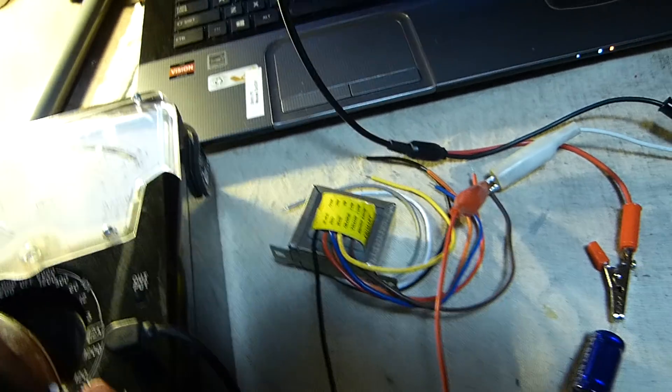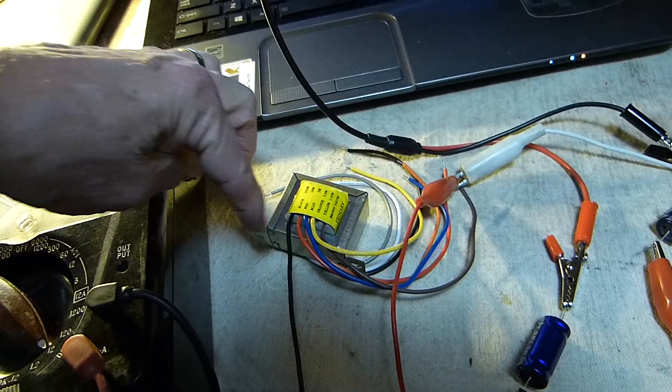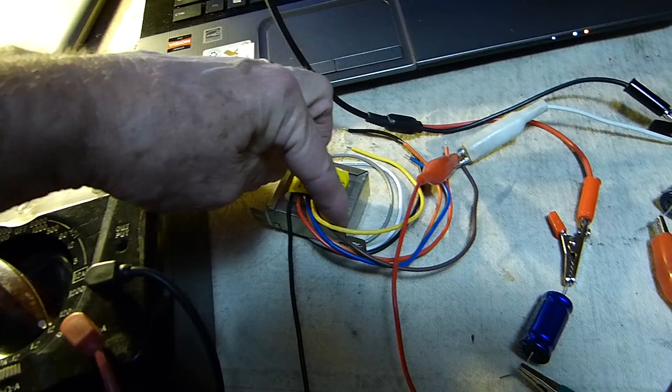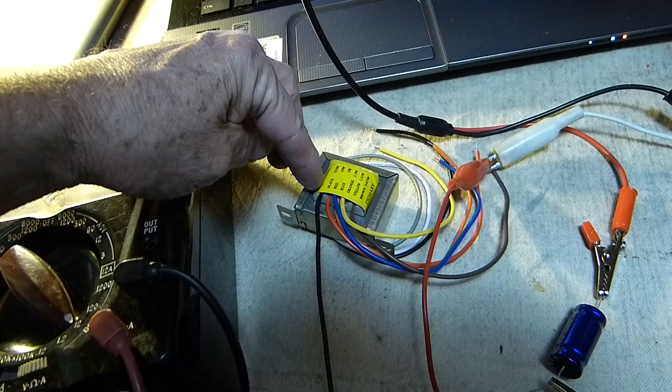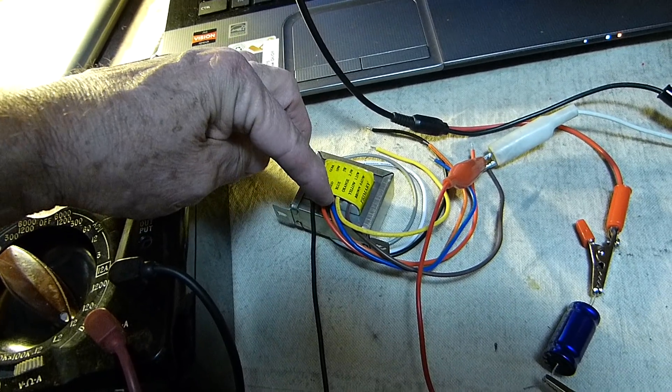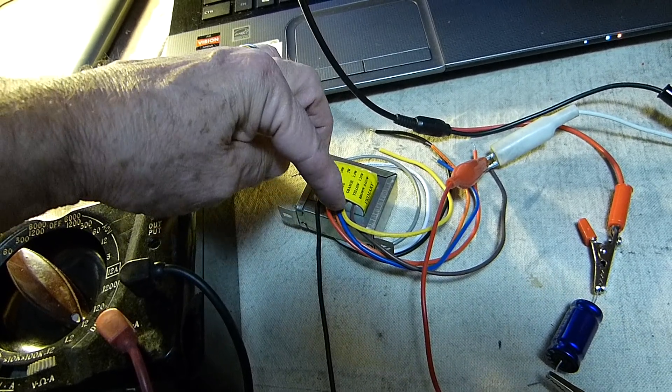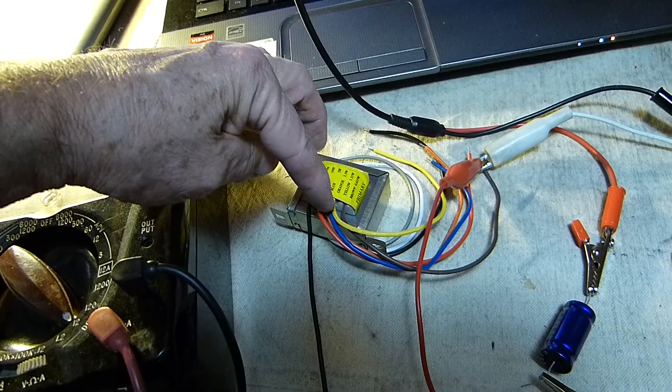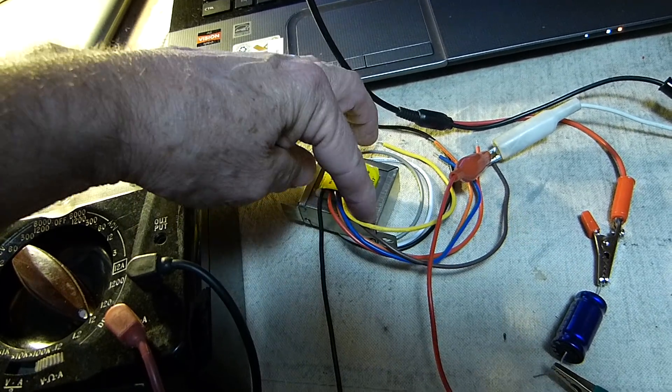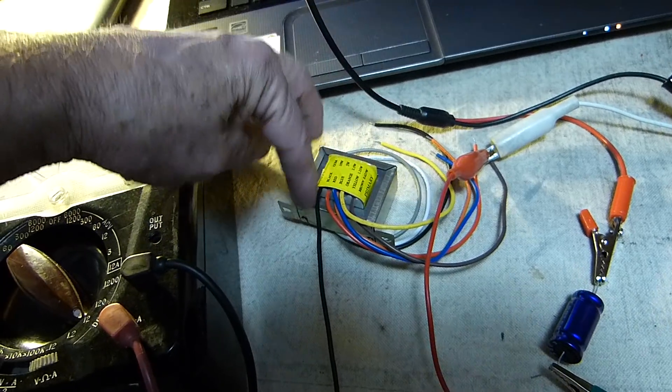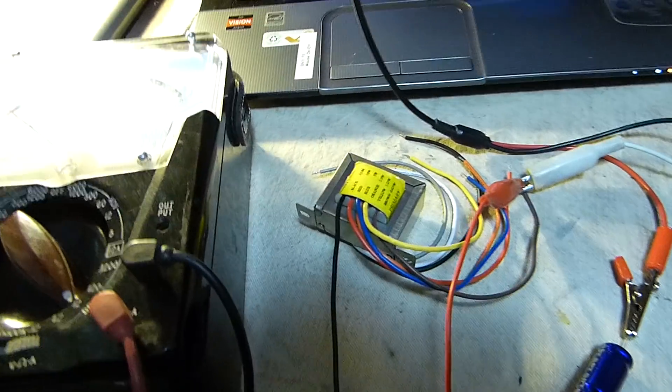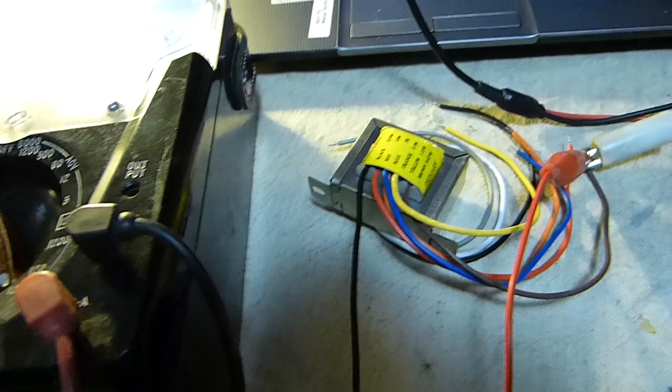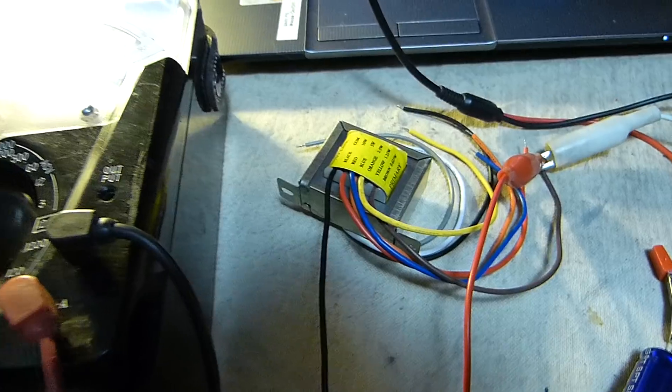There's about six henries in this choke right here from one end to the other. That would be 8K and the center tap would be at the 2K point, and it's one and a half henries from the center tap to one side and one and a half henries from the center tap to the other side, the top and bottom of the primary winding.